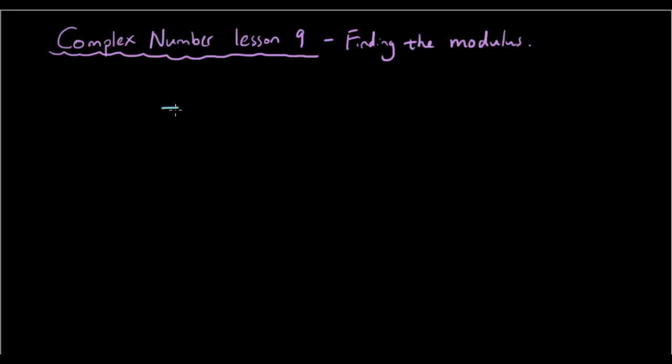So let's define a complex number z as 3 plus 2i. And if you guys remember how to represent this on the Argand diagram, we have the real number plane and the imaginary plane.